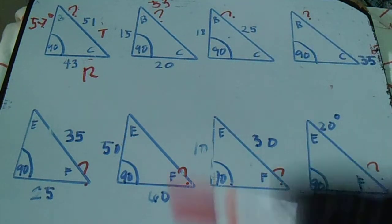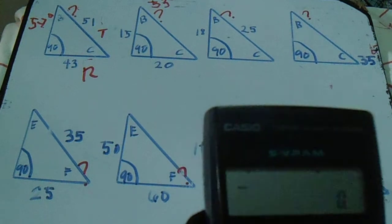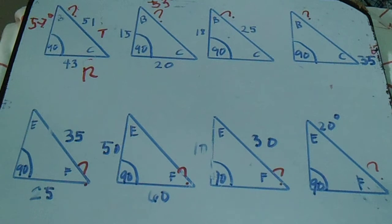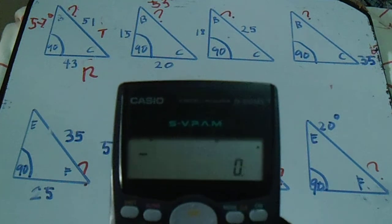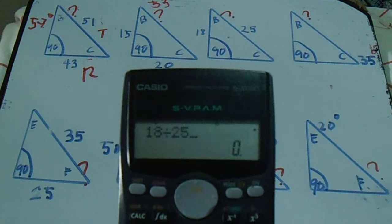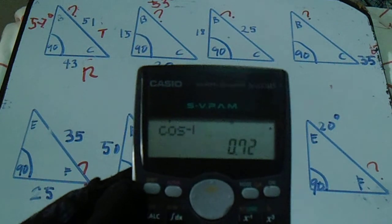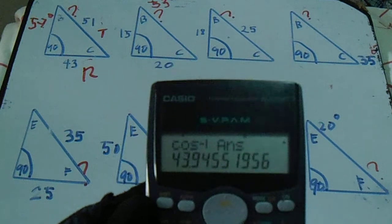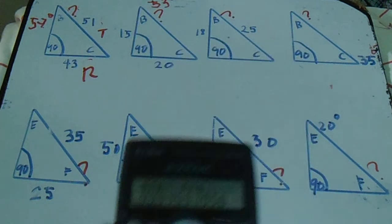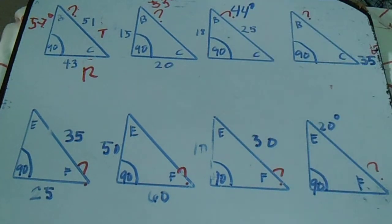Next, our given is set and travel — we will compute letter B again, finding its degrees. Just divide 18 by travel, then press shift and use cosine. Our answer is 44 degrees.